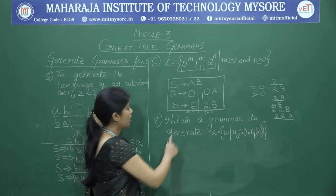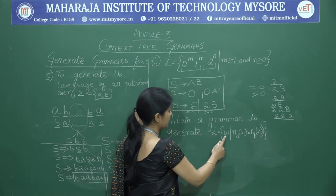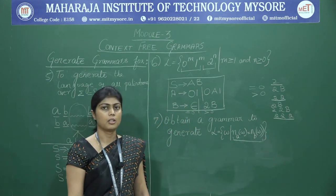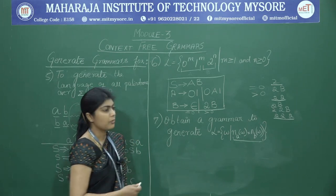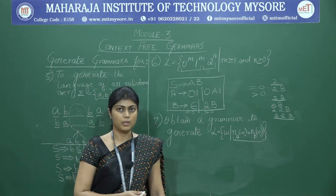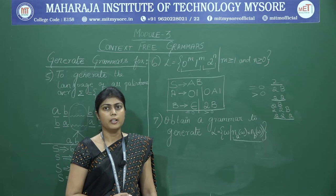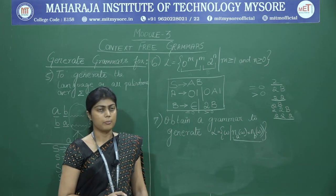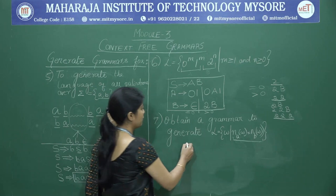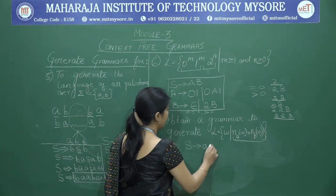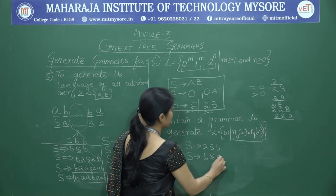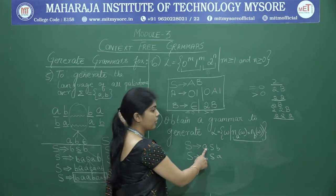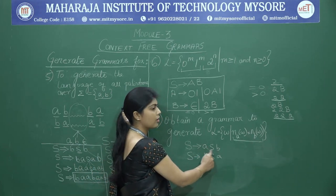The next problem: obtain a grammar to generate L = {w | the number of a's in w equals the number of b's}. Here we are not concerned with the order in which a's and b's appear — they can appear in any order. All possible strings with equal numbers of a's and b's must be generated.